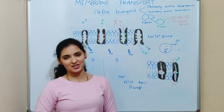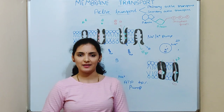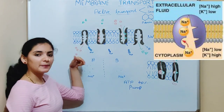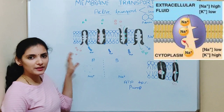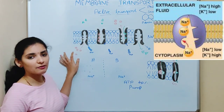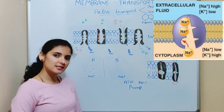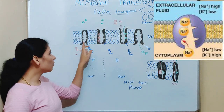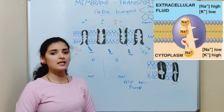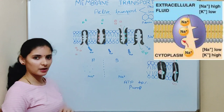The sodium-potassium pump works in a cyclic manner. In the first step, the pump is open to the inside of the cell. In this form, the pump has affinity towards sodium ions. As a result, 3 sodium ions go and bind to the pump, because the sodium-potassium pump has 3 binding sites for sodium ions.